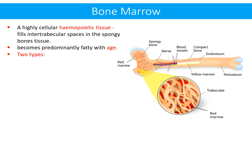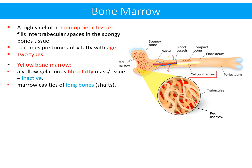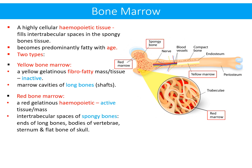Bone marrow is a highly cellular hemopoietic tissue filling the inter-trabecular spaces in spongy bone, becoming predominantly fatty with age. There are two types: yellow bone marrow, a yellow gelatinous fibro-fatty inactive tissue present in the marrow cavities of long bones — the shafts — and red bone marrow, a red gelatinous hemopoietic active tissue present in the inter-trabecular spaces of spongy bone at the ends of long bones, bodies of vertebrae, sternum, and flat bones of the skull.